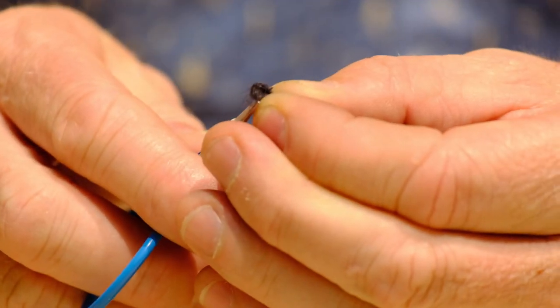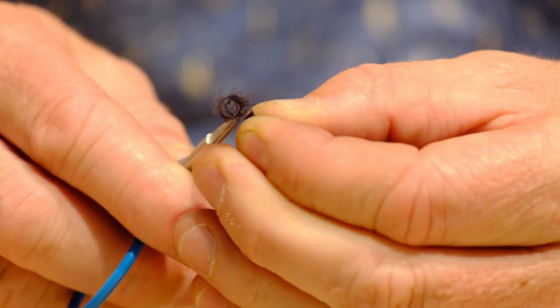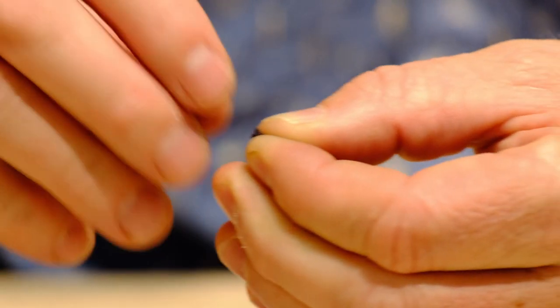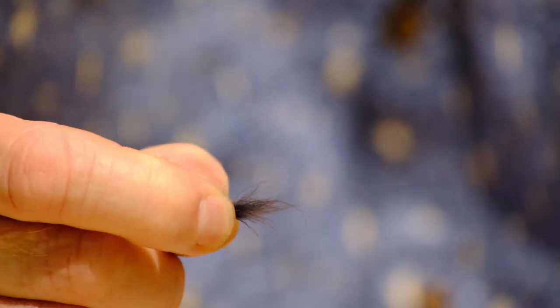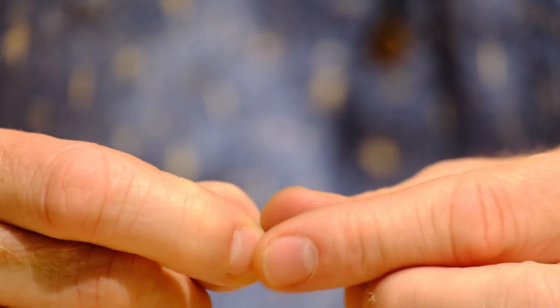Carefully remove the CDC stem and there you have it, a small puff of CDC for either a post, a flower, an underwing caddis, or other applications.